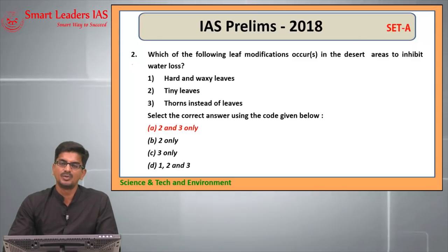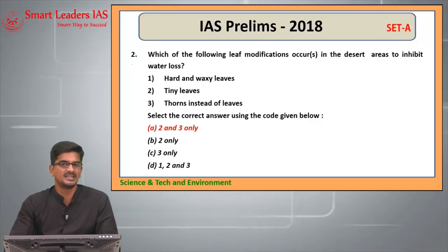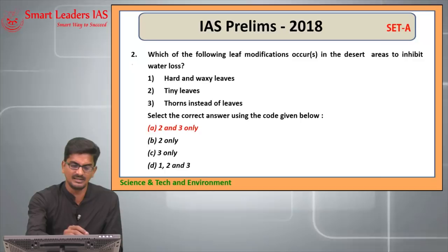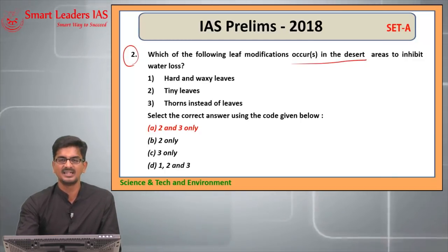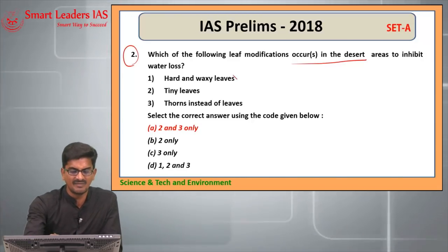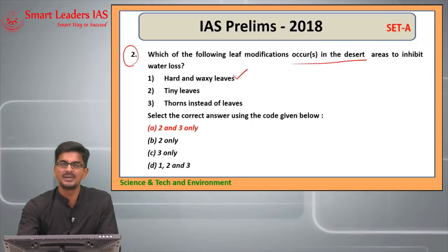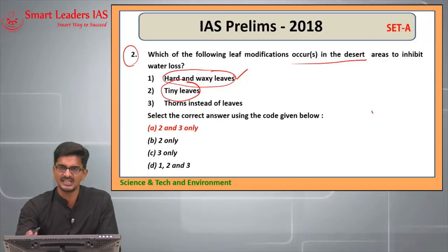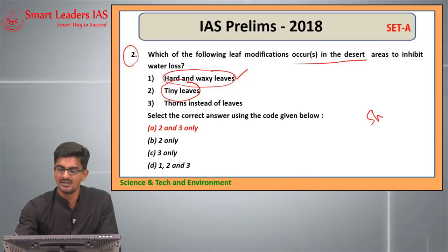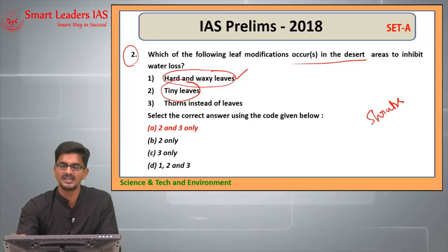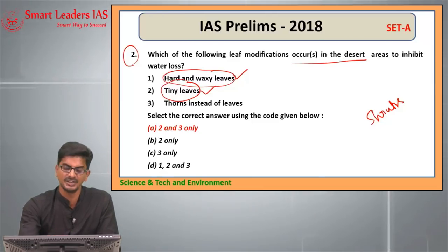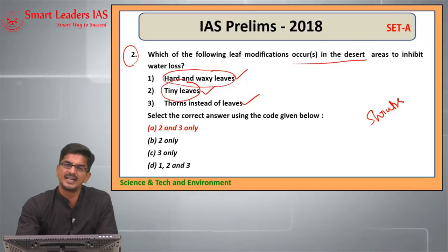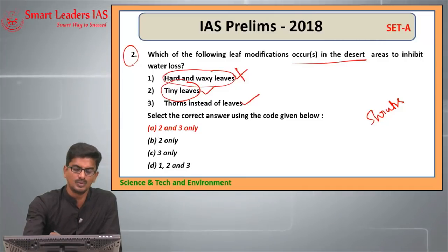Question number two: UPSC is well known for asking seemingly simple but deceptively confusing questions, and question number two falls in this category. Leaf modification that occurs in desert areas — xerophytic modifications. Hard and waxy leaves is not a characteristic feature of desert modifications. Tiny leaves result in reduced transpiration and are present in shrubs in desert areas — that is correct. Thorns instead of leaves is a classical xerophytic modification. So one is wrong; two and three are correct. Answer: A.